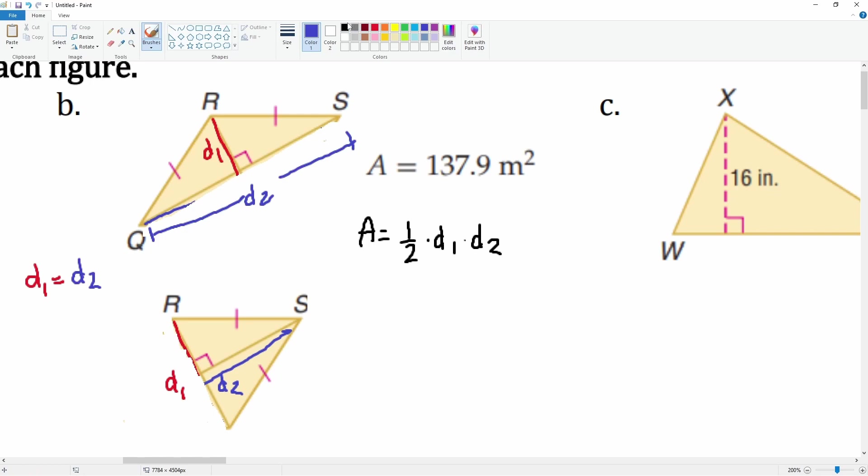So we can write diagonal one as x and diagonal two as x as well. The area is equal to 1/2 × d1 × d2, which is 1/2 × x × x. And we know that the area is equal to 137.9.